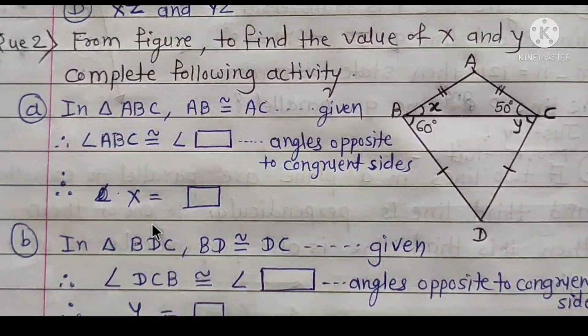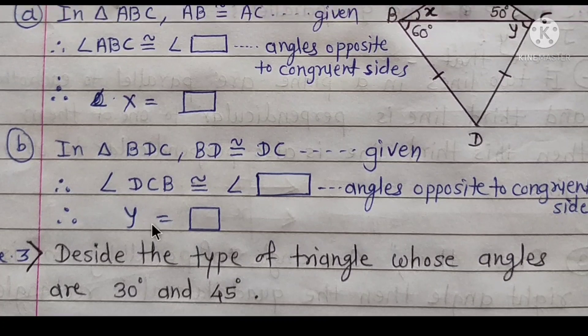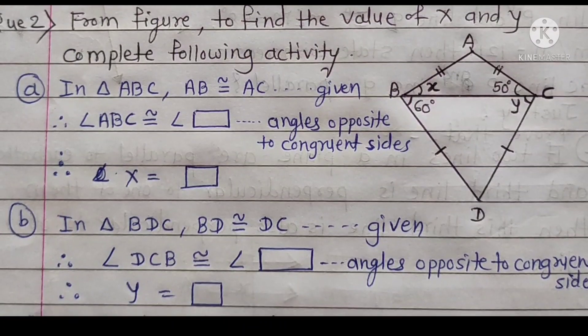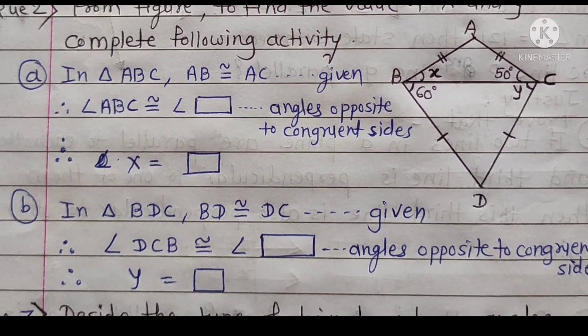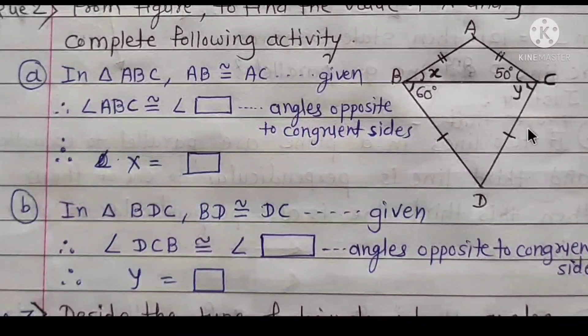Second part: In triangle BDC, finding the value of Y. Therefore, Y is equal to 60 degrees.